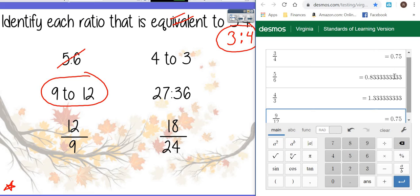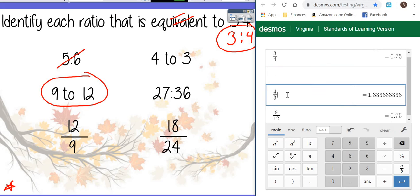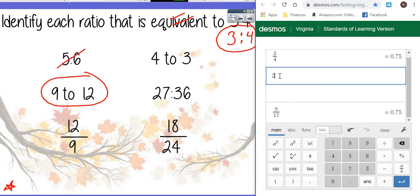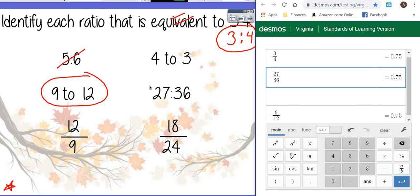So we've got three more to try. Let's go ahead and get rid of these if we can, the ones that are here because we know that those did not work. Let's go ahead and put in 27 divided by 36. That gave us point seven five. So we're going to come right back over here and we have another one that's equivalent.